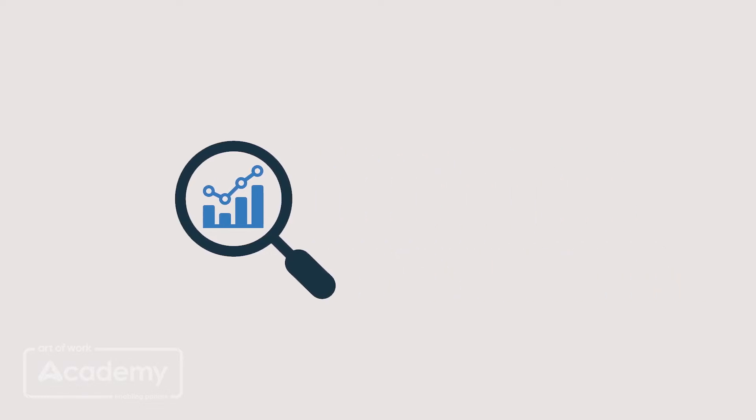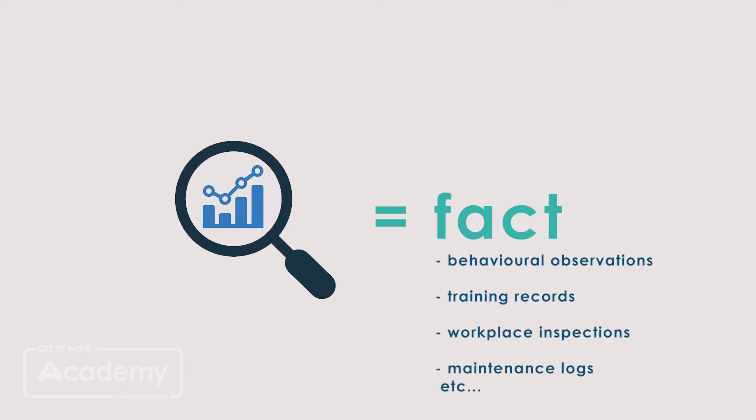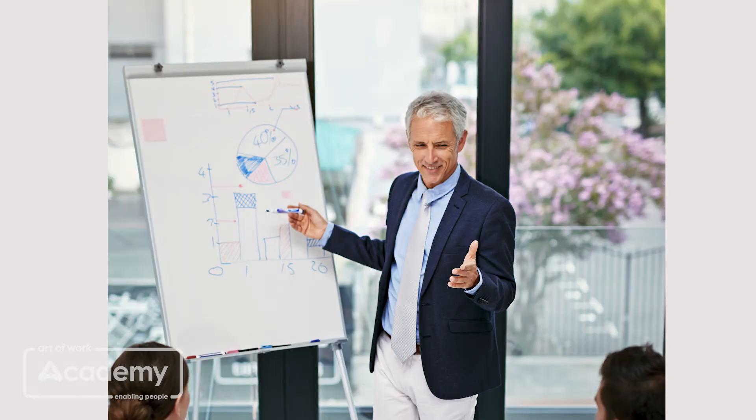Now, these audits, in turn, provide the facts or the information, the records that organizations then make decisions on. These can be behavioral observations, training records, workplace inspections, maintenance sheets. And after we have them, then organizations go like, oh, we didn't pass this, so we need to do more of this. Or, hey, our training is good. We don't need to worry about our people because we've got this fact.